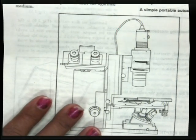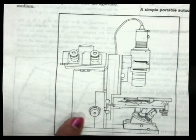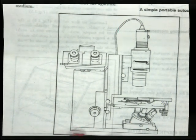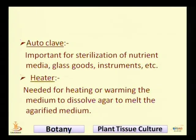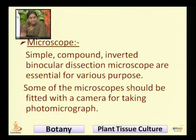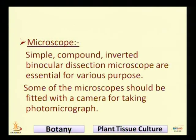Now we are talking about the microscope, which is used to observe different organisms or colonies. A special type of microscope is also required in the general plant tissue culture laboratory. The heater is needed for heating or warming the medium and to dissolve agar or melt an agarified medium. There are three types of microscopes basically required in a tissue culture laboratory: simple, compound, inverted, and binocular dissection microscopes, which are essential for various purposes.